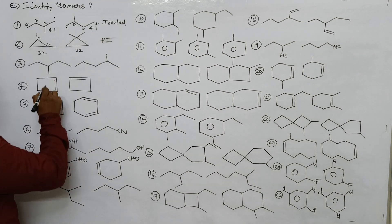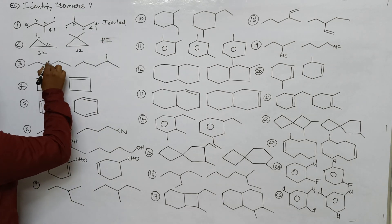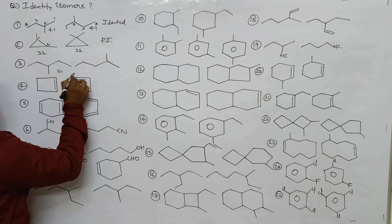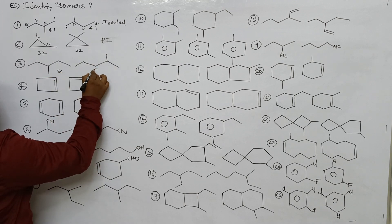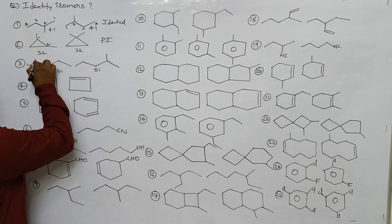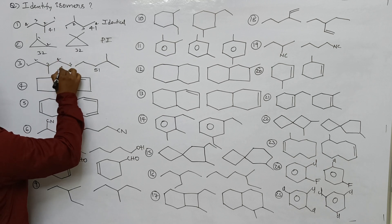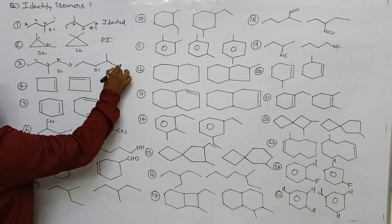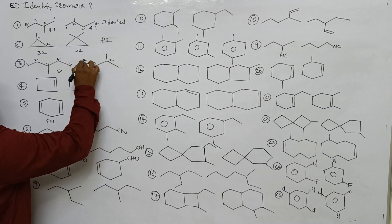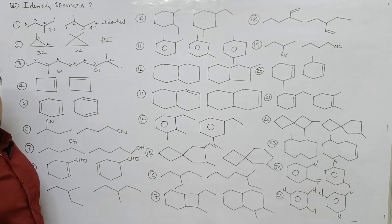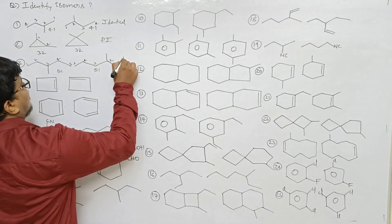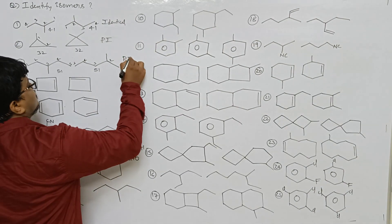Third question: one two three four five — that is 51. Both structures give 51. Isomeric number same, position different. So these two are positional isomers.